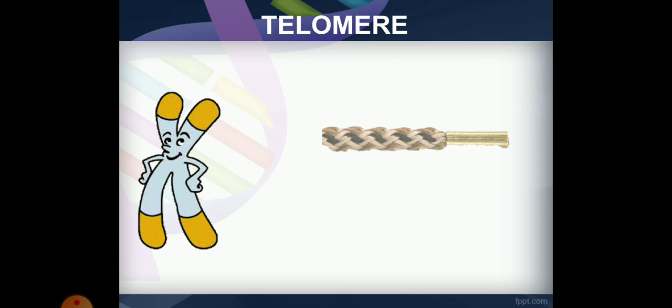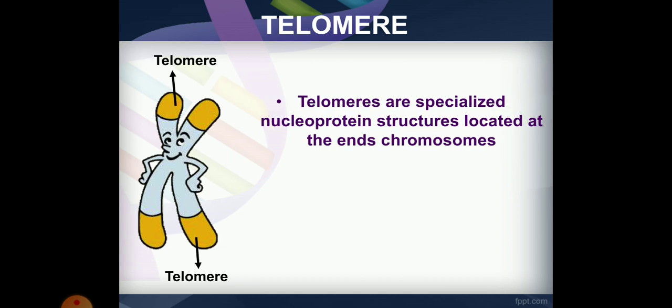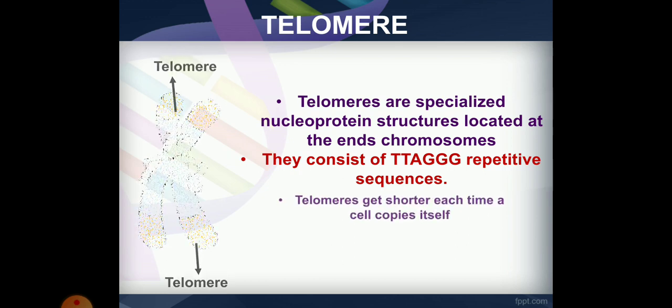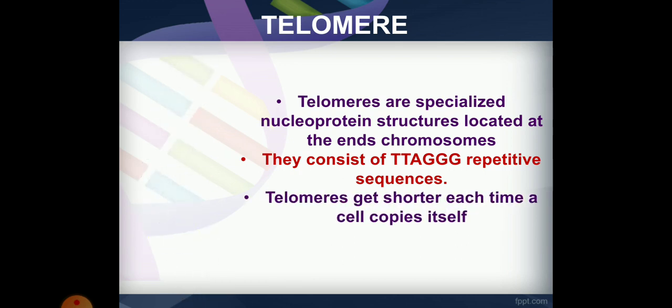Telomeres are specialized nucleoprotein structures located at the ends of chromosomes. The base repeat sequence is TTAGGG. Each time a cell divides, the telomere gets shorter.